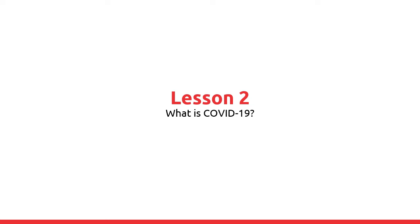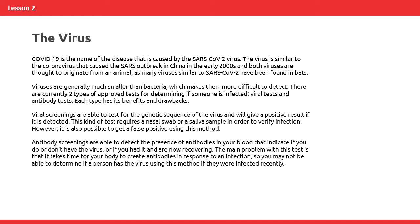Lesson 2: What is COVID-19? The Virus. COVID-19 is the name of the disease that is caused by the SARS-CoV-2 virus. The virus is similar to the coronavirus that caused the SARS outbreak in China in the early 2000s, and both viruses are thought to originate from an animal, as many viruses similar to SARS-CoV-2 have been found in bats.